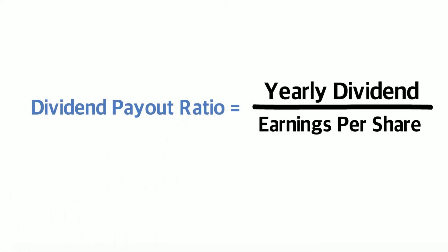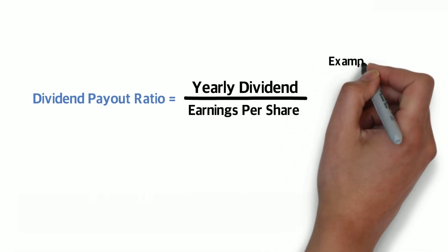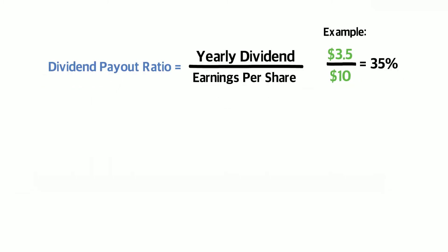A company can do a multitude of things with its net income or earnings. They can reinvest it back into the company to launch new projects, buy new equipment, pay down debt, etc. They can also use a portion of their net income to buy back shares. If a company is sitting on a large pile of cash year after year, shareholders will demand dividends to be paid out, since shareholders can invest these dividends instead of just letting it pile up.